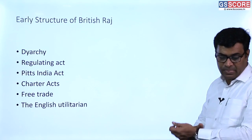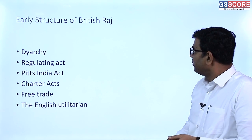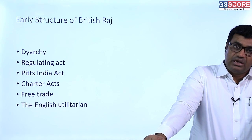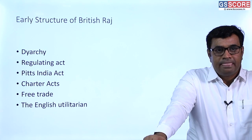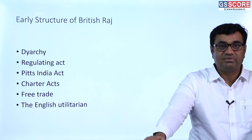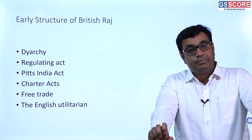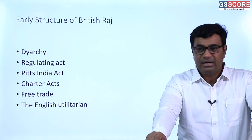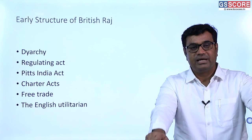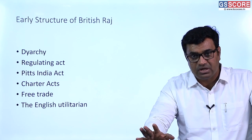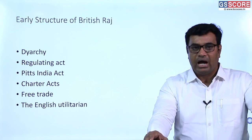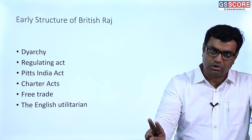The third major topic is the early structure of the British Raj: the Regulating Act, Pitt's India Act, Charter Acts, free trade, and English Utilitarians. When British established control over Bengal, they established a dual system of government. Under this system, British enjoyed all authority over Bengal but shared no responsibility — responsibility lay with the Nawab. Two authorities ruling over the same province simultaneously is known as the dual system of administration.